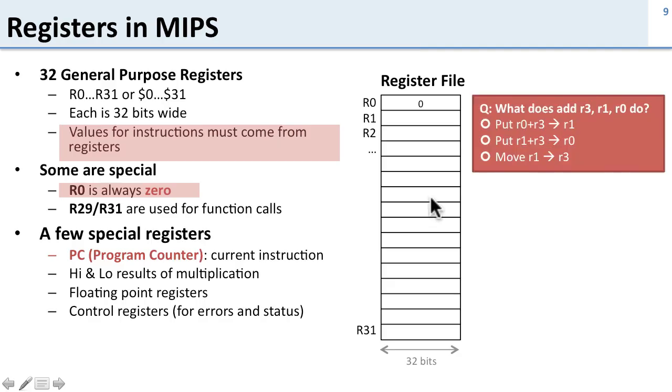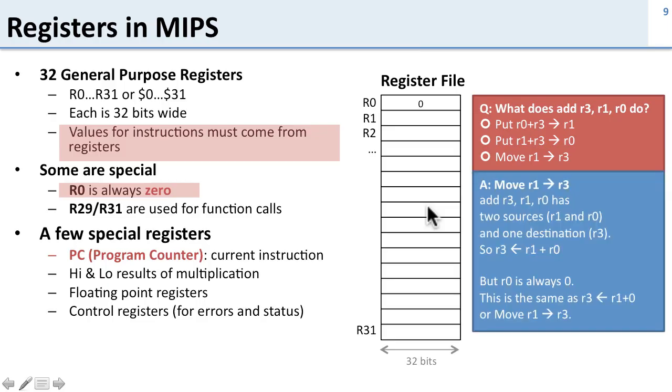So with that in mind what does the following instruction do? Add R3, R1, R0. Well this instruction effectively moves R1 to R3. And the reason it does that is the instruction here says put into R3 R1 plus R0. But since R0 is always zero this is the same thing as saying just put R1 into R3. So this is the same as moving R1 to R3 because we're just adding zero to R1 and storing it in R3. So because we know R0 is always zero we can make a move instruction which moves data between registers without having to do anything special.